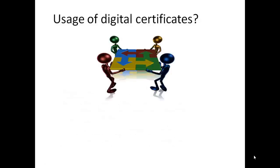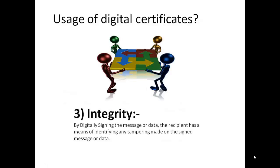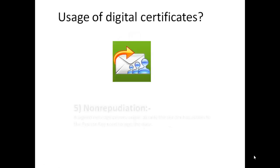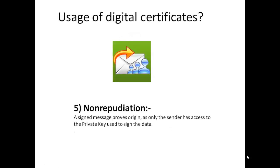Number three is integrity, which assures that signed messages have not been tampered with or modified during transmission. Number four is access control, which allows only recipients with valid public keys to access the data. The fifth usage is non-repudiation, which guarantees that the data is signed by the particular sender and the recipient cannot deny that he or she has received the message.